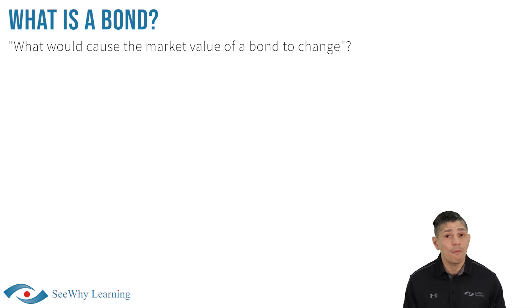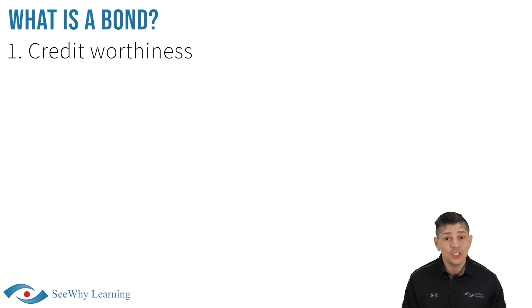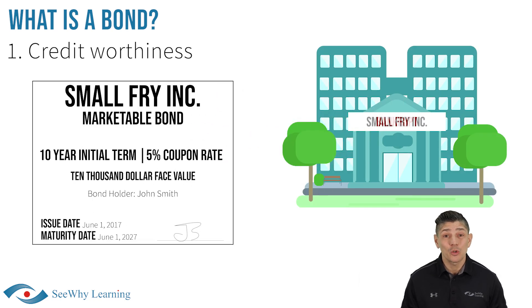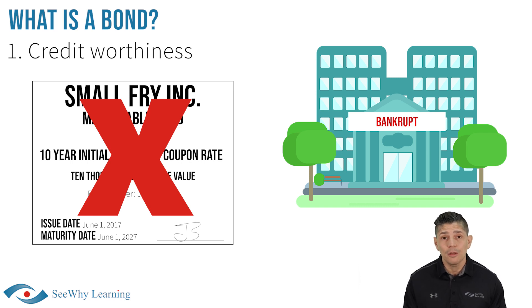You may be wondering: what would cause the market value of a bond to change? The two main factors are the issuer's creditworthiness and the attractiveness of the bond's features compared to otherwise similar bonds. The creditworthiness of the issuer can have a significant impact on the market value of a bond. If you own a bond where the issuer is bankrupt with no hope of paying its debts, it's worthless — just a pretty piece of paper. Fortunately, there are bond rating companies that evaluate the risk of bonds and assign them a rating. Government bonds generally have the highest credit rating due to the government's power of taxation, and many large corporations have very high credit ratings as well.